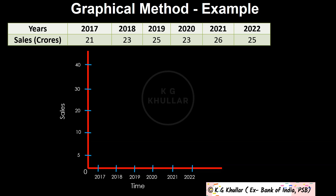For 2017, sales is 21 crores, represented by this dot. For 2018, sales is 23 crores, represented by this dot. For 2019, sales is 25 crores, represented by this dot. For 2020, sales is 23 crores, represented by this dot. For 2021, sales is 26 crores, represented by this dot. And finally for 2022, sales is 25 crores, represented by this dot.